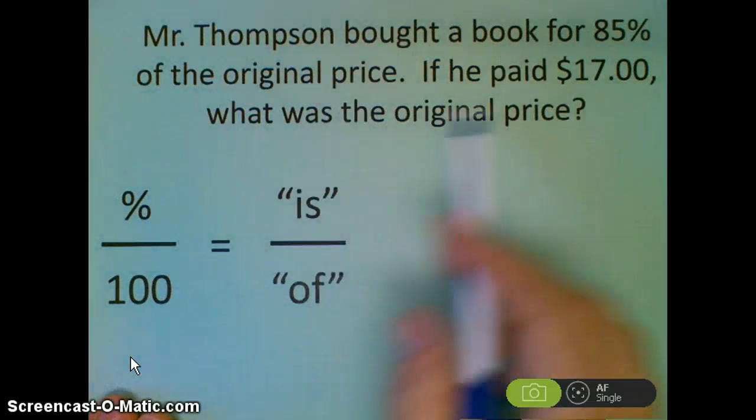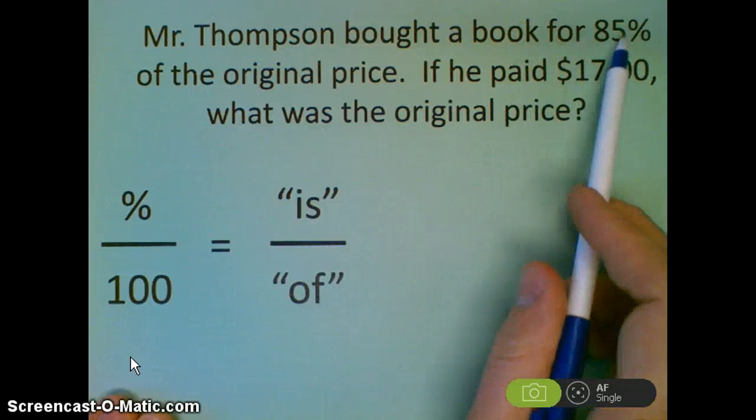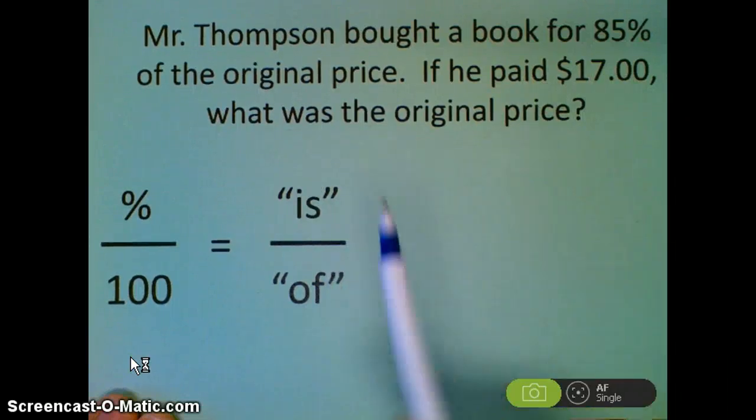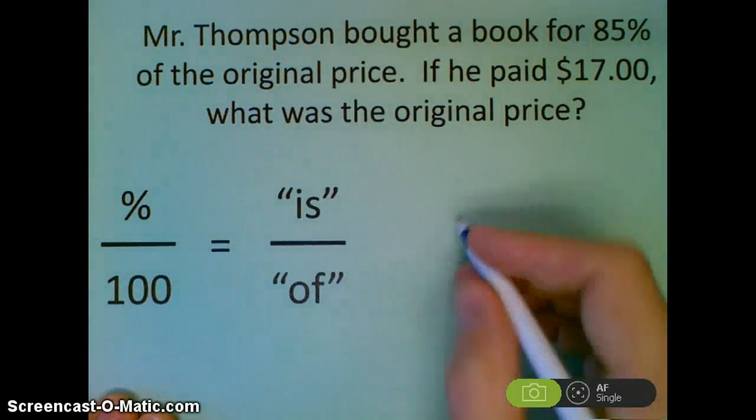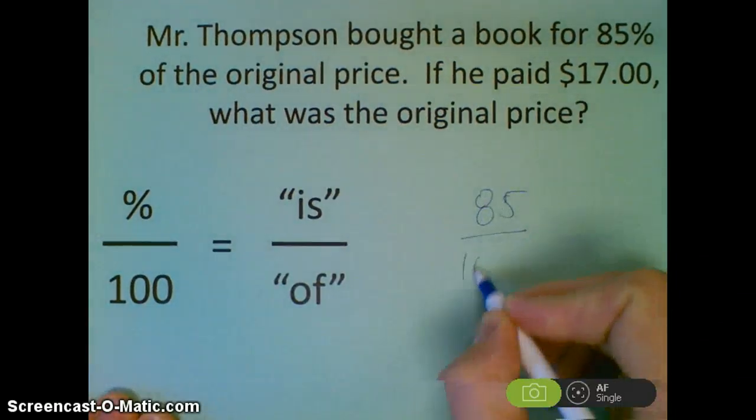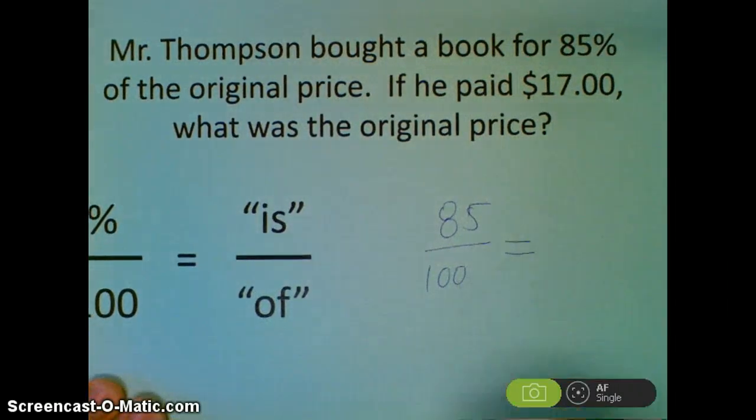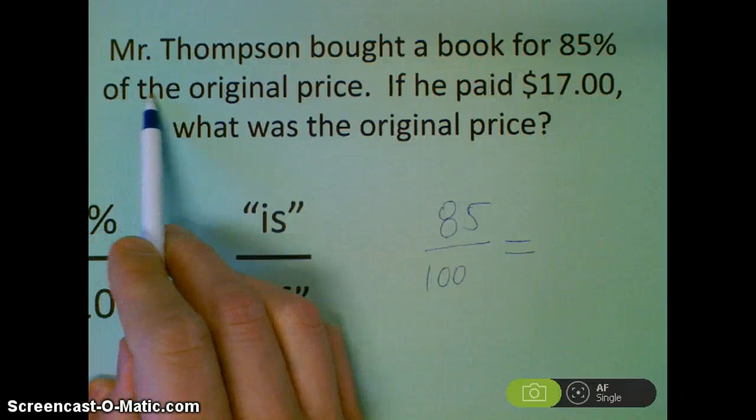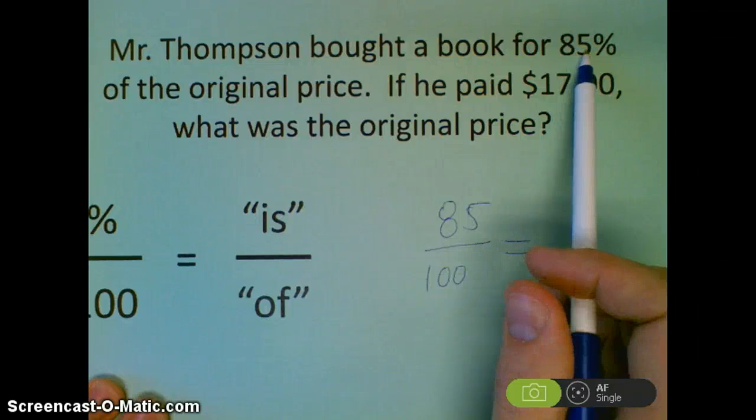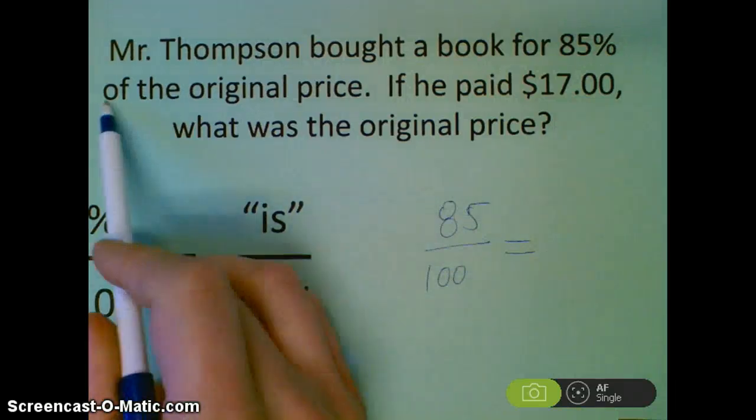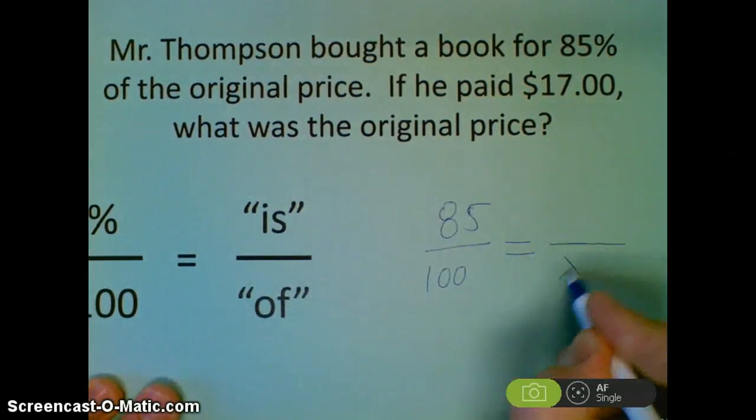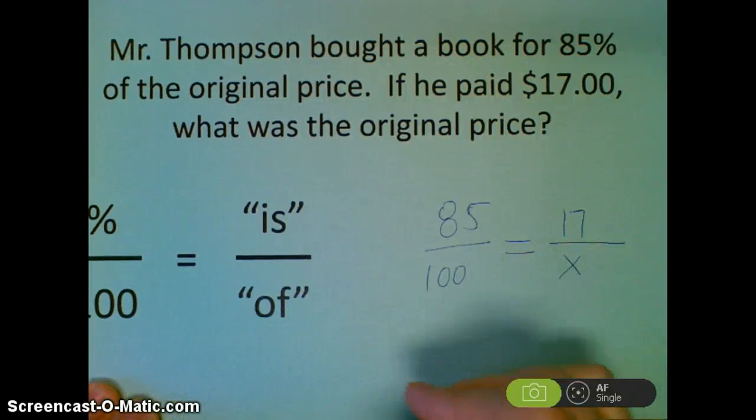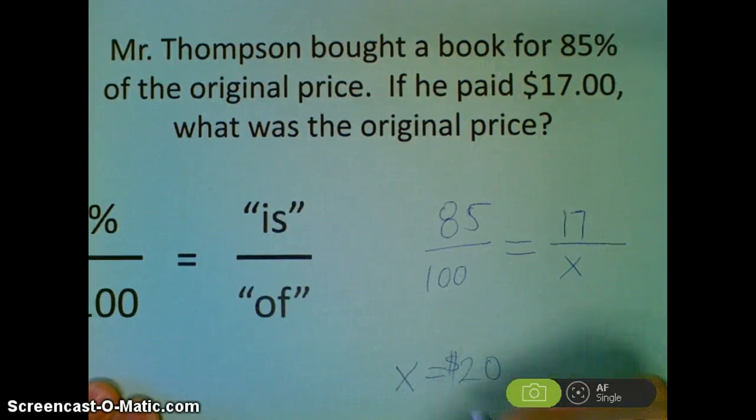Another question. Again, you don't have to write it down, but you do have to try it. Mr. Thompson bought a book for 85% of the original price. If he paid $17, what was the original price? Let's give it a try. So here we go, I'm given 85. 100 is always the same. So I can look at this as kind of like a smaller number on top and the total on the bottom. Maybe you picked out of the original price. And you know that if you paid 85% of the original price, you paid less than what the original price was. So what I'm trying to find is the original price, and I paid $17. So 17 times 100 divided by 85. X equals $20. I paid $20.